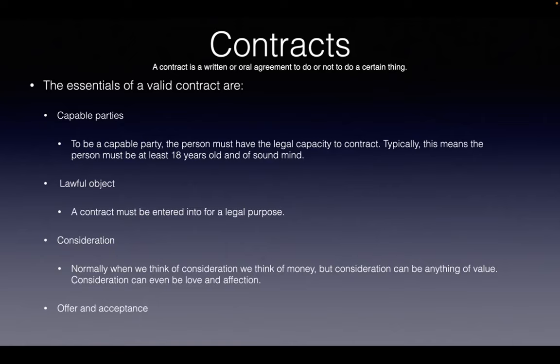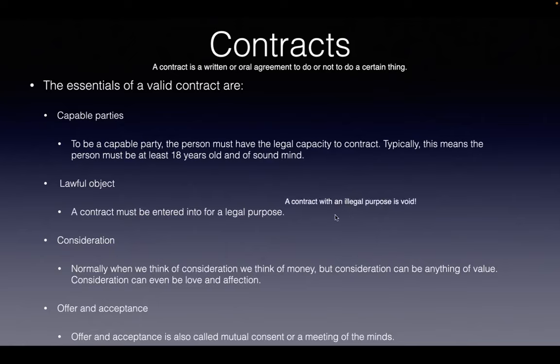Then there's offer and acceptance, also called mutual consent or meeting of the minds. As you go through, offer and acceptance, mutual consent, and meeting of the minds all mean the same thing. If a contract is for an illegal purpose, it is automatically void.